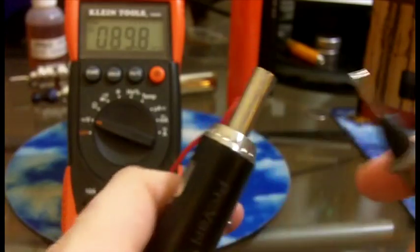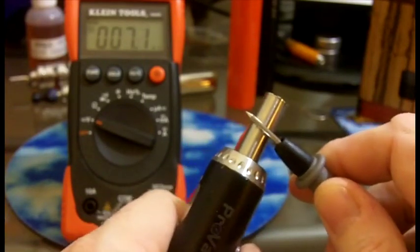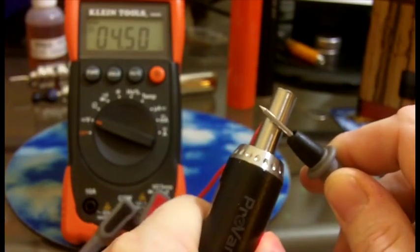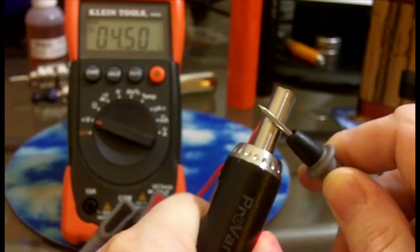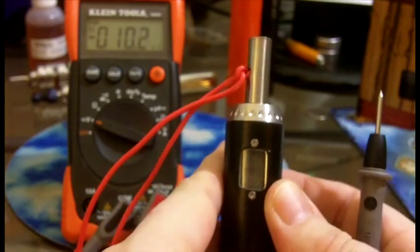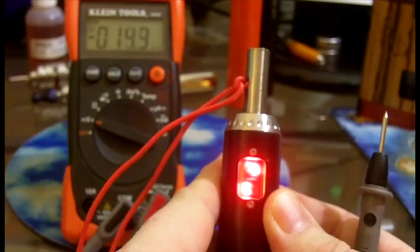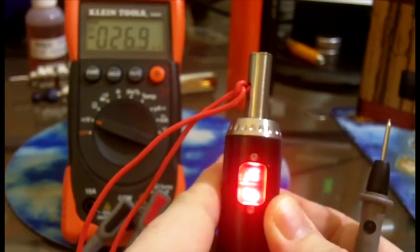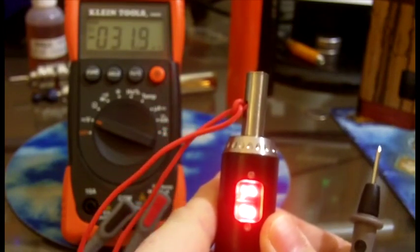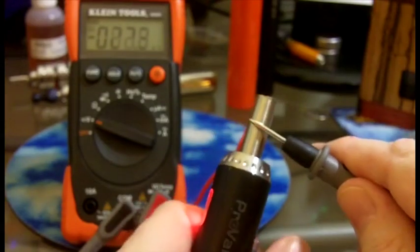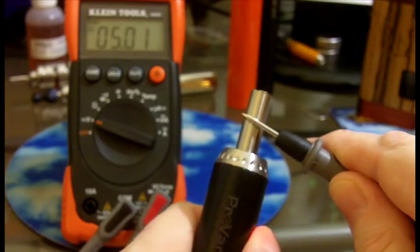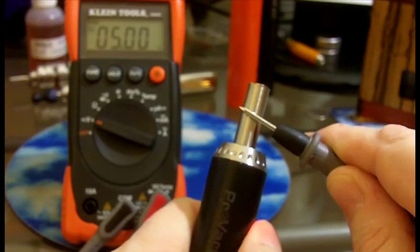And then you take the 510 and connect it to the mod that you want to test. Now it's connected to the positive lead, so what you're going to do is put the negative lead to the body of the tester and push the fire button, 4.5 volts. That's exactly what I have it set to. Let's pop the ProVari here up to 5 volts. There we go. Push the fire button, hold the negative lead, and 5. Exactly. Perfect.